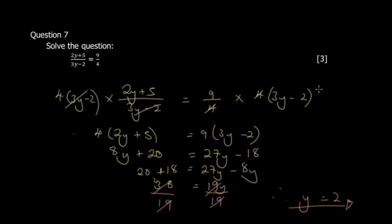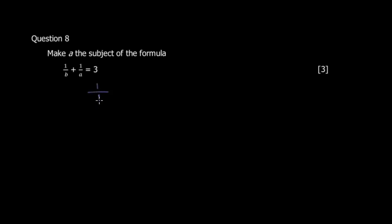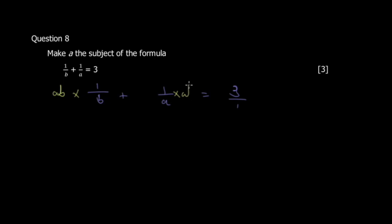That's question seven done. Question eight says: 1/b + 1/a = 3, and we are asked to make a the subject of the formula. We multiply every term by the lowest common multiple of the denominators, which is ab.